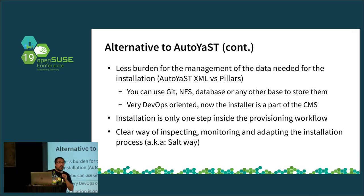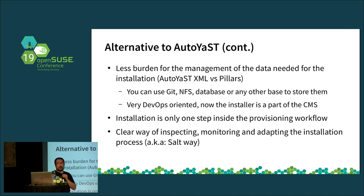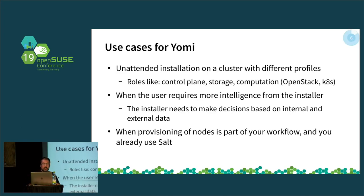Another benefit is less burden for DevOps when they need to apply knowledge during monitoring, inspecting logs, and understanding what goes wrong. We use classic tools, and the log files are in the place they always live, in the format that Salt uses. There is no specific knowledge needed to understand what happened when something goes wrong during the installation process. The use case is clear: we have a cluster with different kinds of nodes — in OpenStack, cloud, and Kubernetes environments.